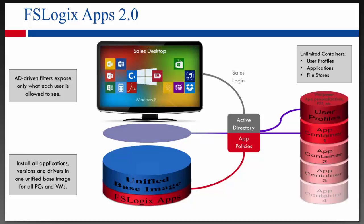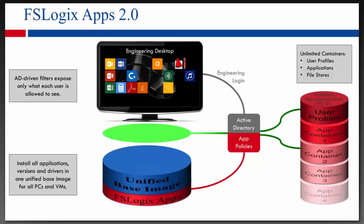When the engineering group logs in, the same concept applies — they get all their applications and their personalization from their profile container. They can have a different version of Office than the sales group had, or the full Adobe version versus the reader version. With our filter driver, we can have different versions of the application installed and isolate those from users — they can't even browse to see the actual program files. They'll only see what they're entitled to inside the registry, inside the file system, and also with file type associations and right-click context menus. FSLogix will handle all of that.